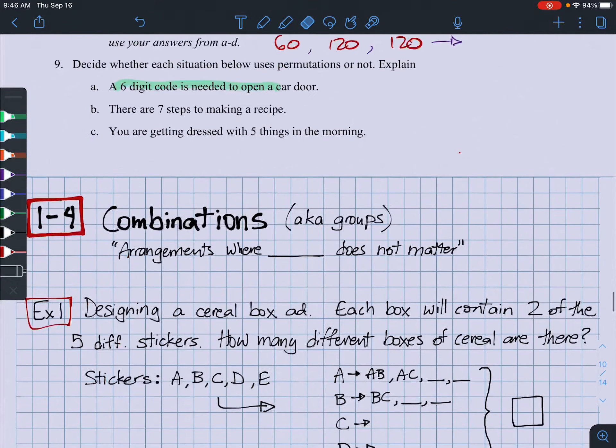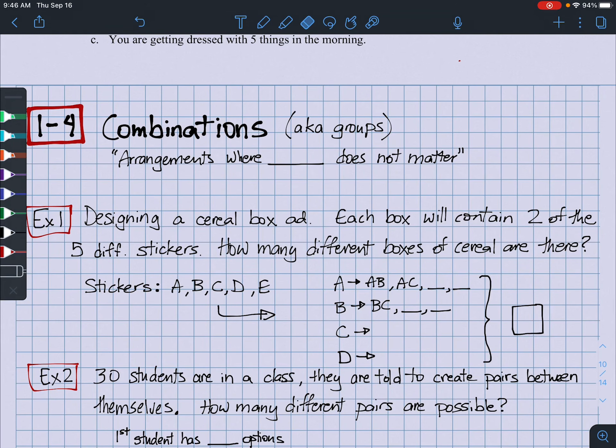All right, lesson 1.4, combinations, a.k.a. groups, arrangements, where order does not matter any longer. So 1.3 was about permutations where order does matter. In today's lesson, we can disregard that. That's why I'm using the idea of just groups. All right, let's look at this first problem.